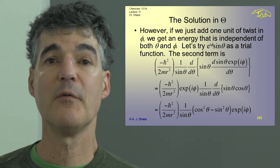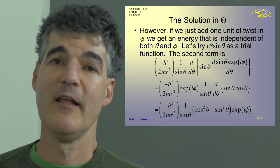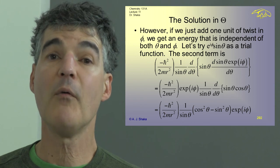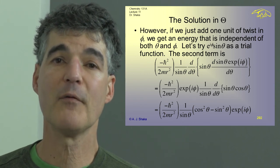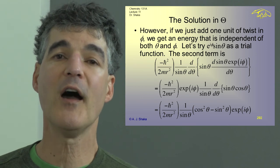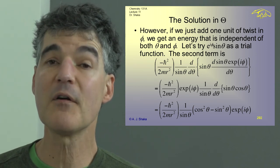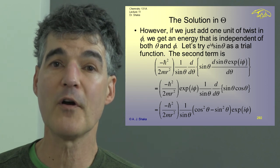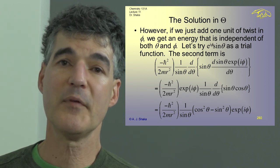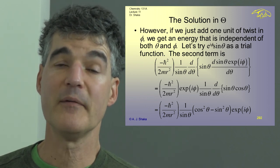That means we have to put in something for the phi part that gives a non-zero derivative. We know what to put in: E to the iM phi. The easiest one to try is M equals 1, since M equals 0 was the constant solution that didn't work. So we put in as our second attempt E to the i phi times sine theta.